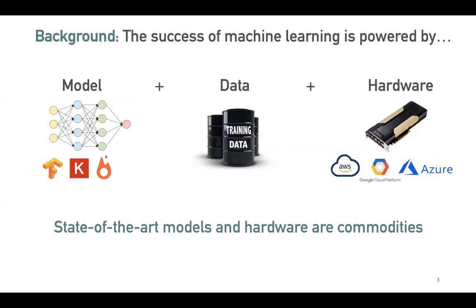First, we have access to these state-of-the-art deep learning models for different use cases, and more important than their really good performance is the fact that they're really easily accessible. You have open source libraries like TensorFlow, PyTorch, Keras, from which you can just write a few lines of code and get access to the best performance model for your use case, without needing the best GPU or a giant set of machines.